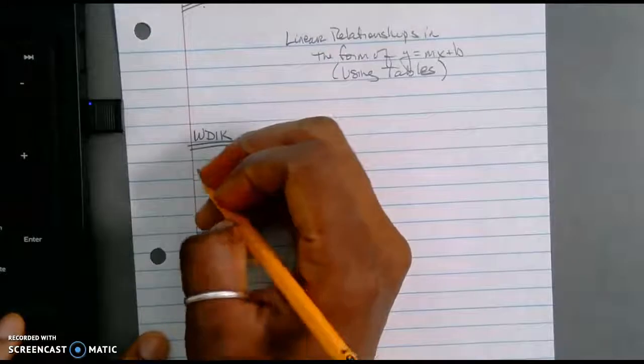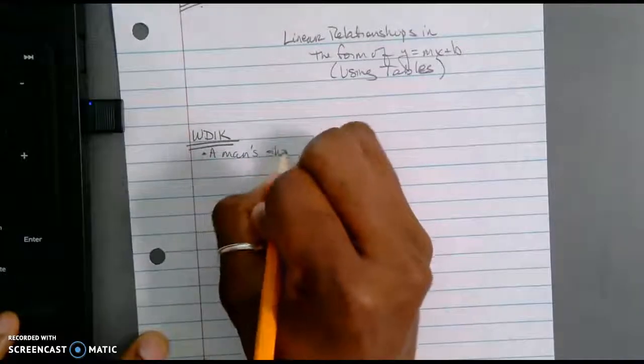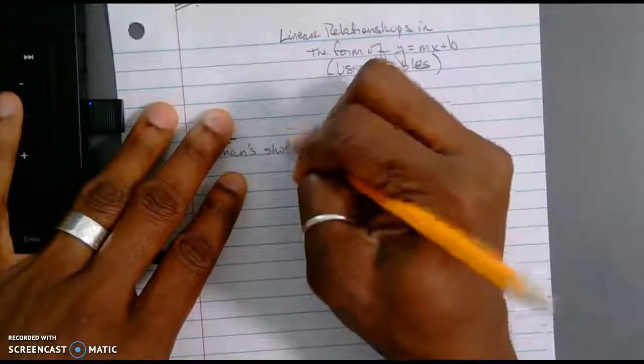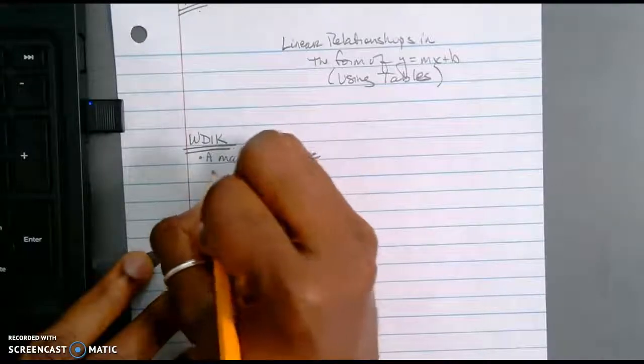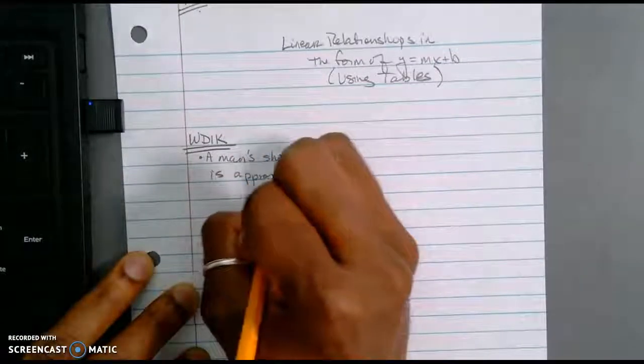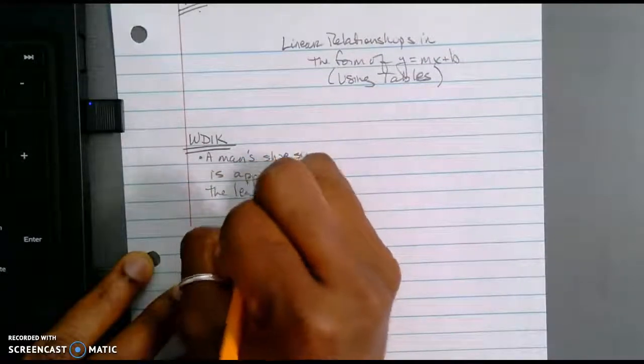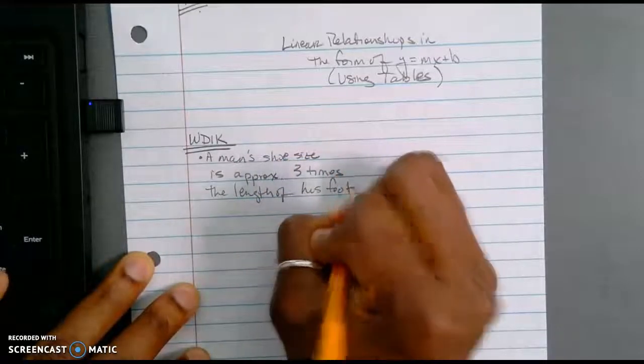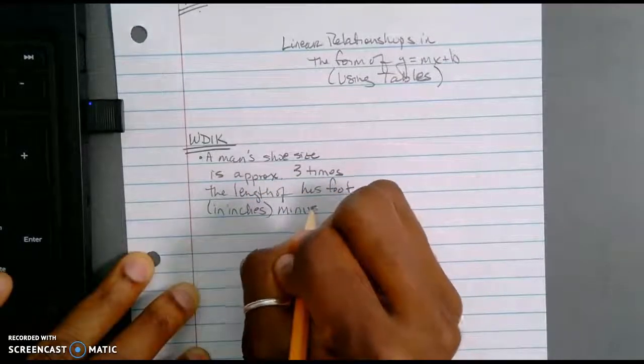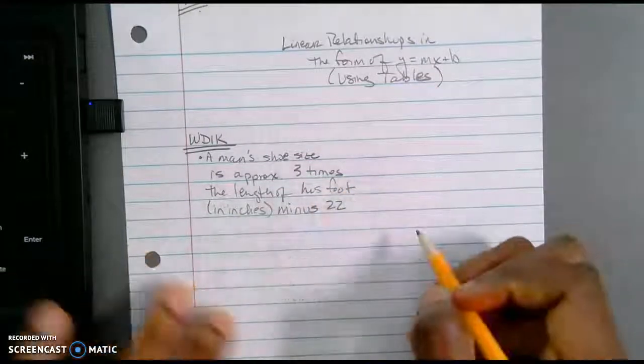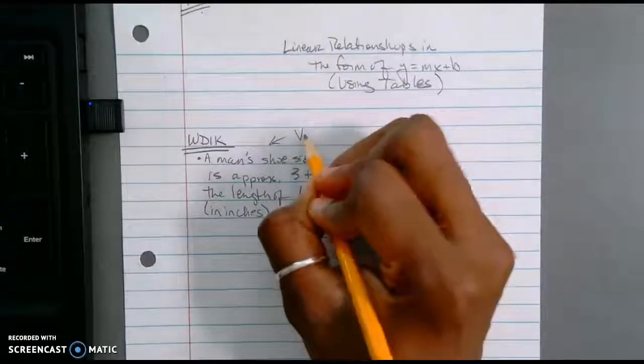So first of all, I want to write down the things that I know. So I know that a man's shoe size is approximately, and I'm going to abbreviate approximately, three times the length of his foot in inches minus 22. So if you notice here, writing down what I know has been like my verbal description.